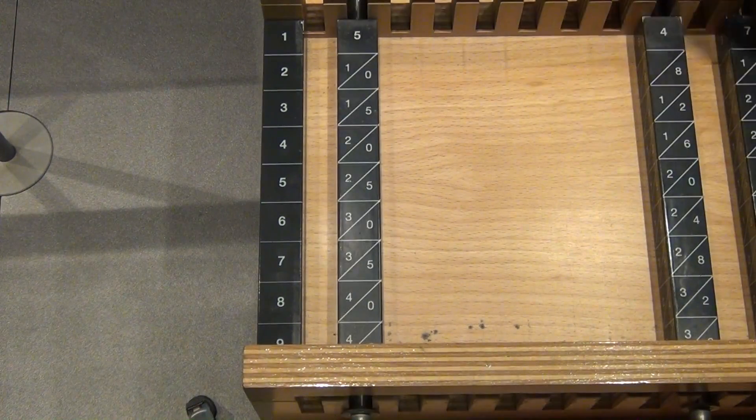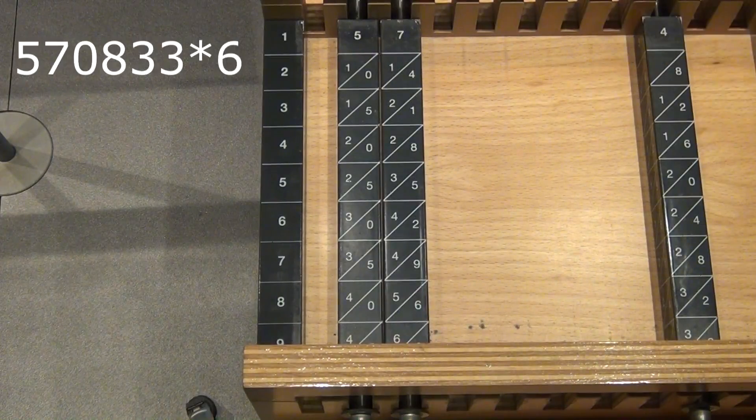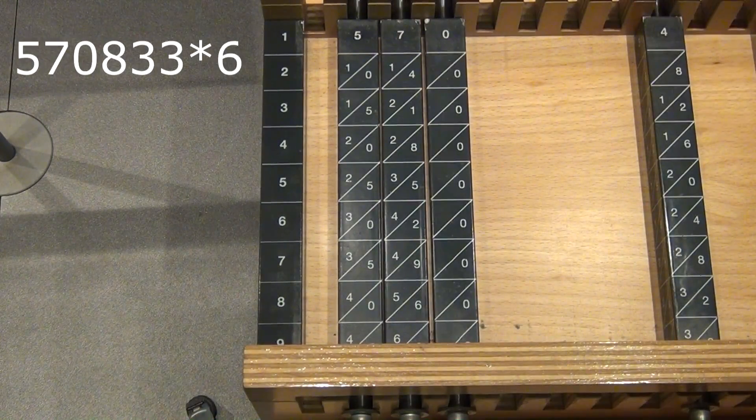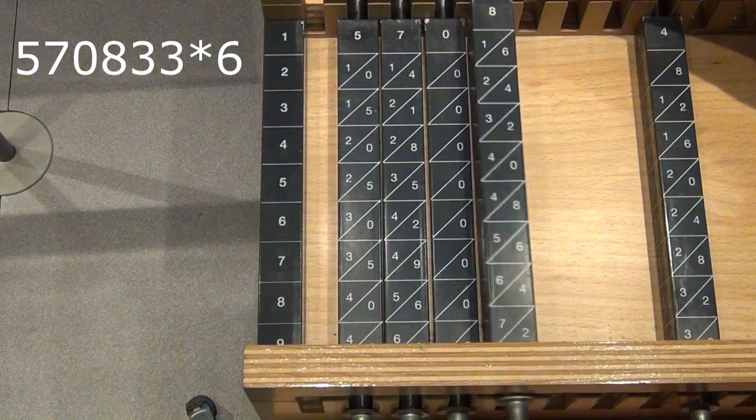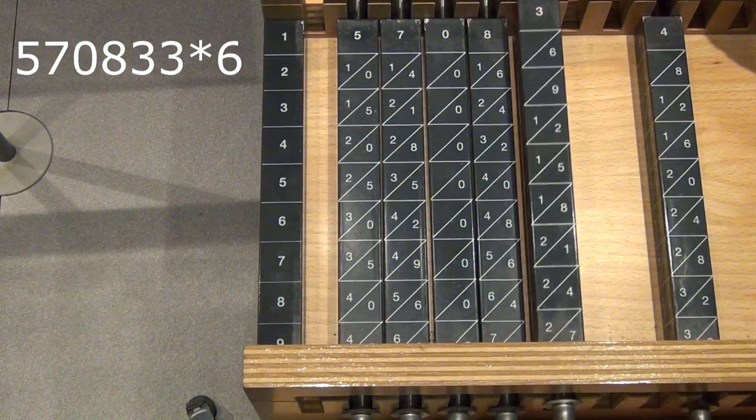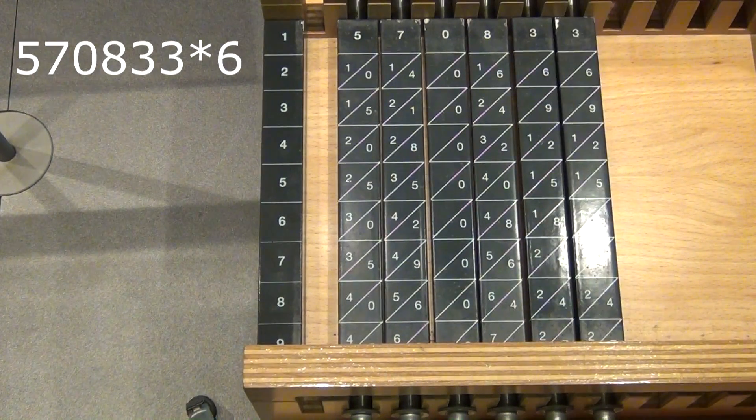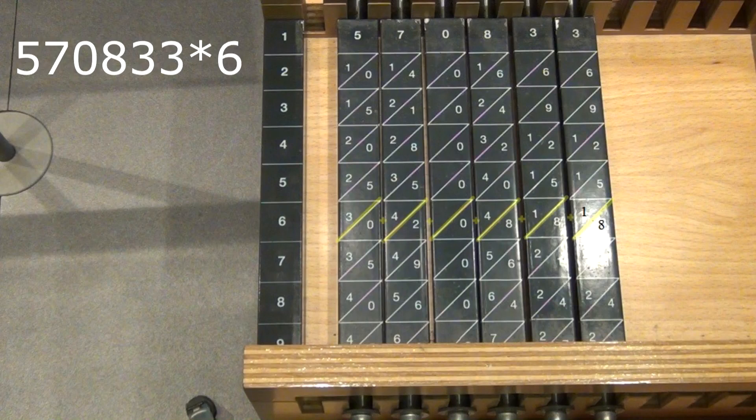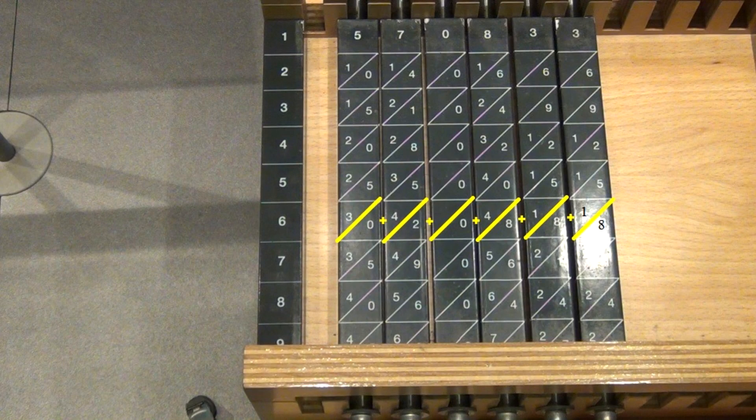Now let's try something more complicated. What about 570,833 times 6. In this case you have to add the digits which share a common diagonal column. The numbers which you cannot see because of the reflection are another 1 and 8.